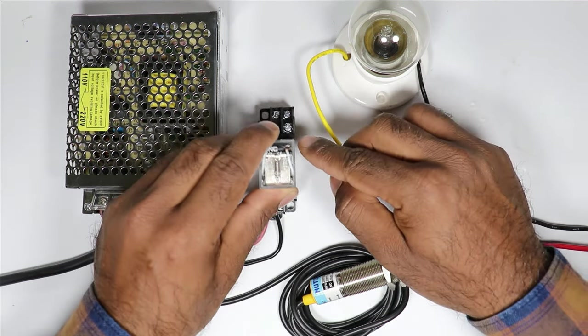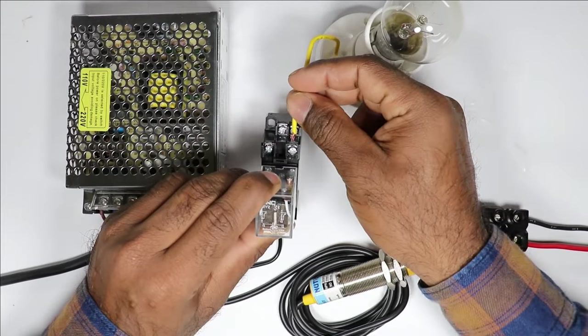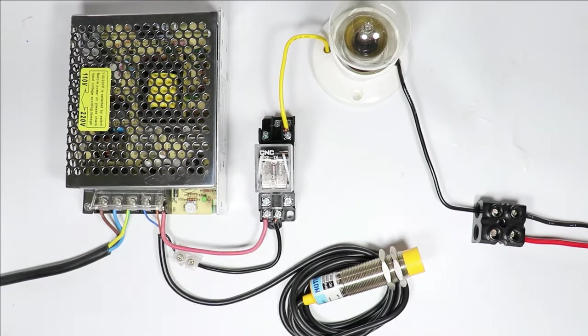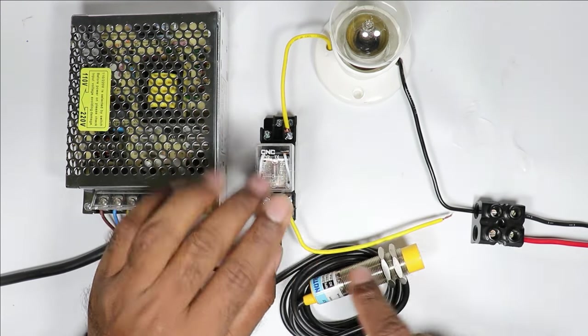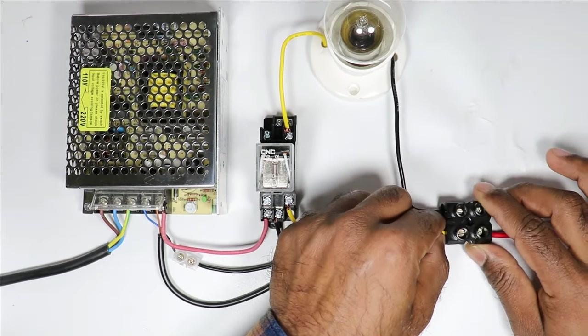One number terminal is of NO, so I am connecting phase wire here. After this, at common terminal also I will provide phase supply. I am connecting one end of wire at common terminal, and the other end of wire is to be connected to phase supply.